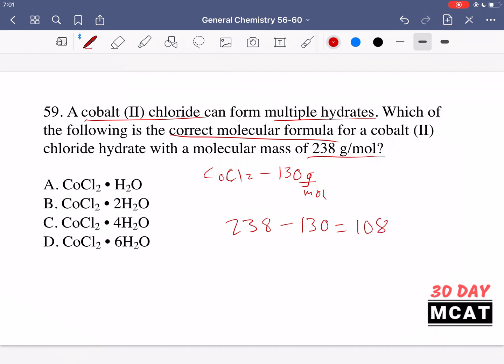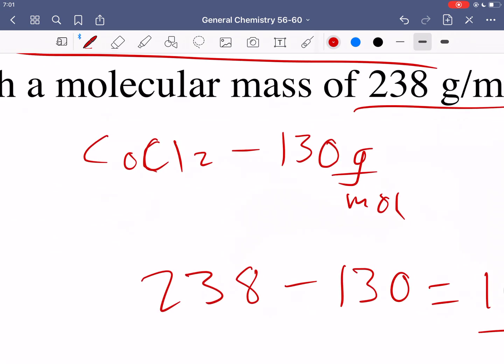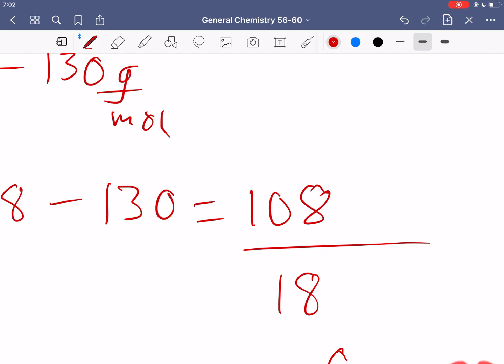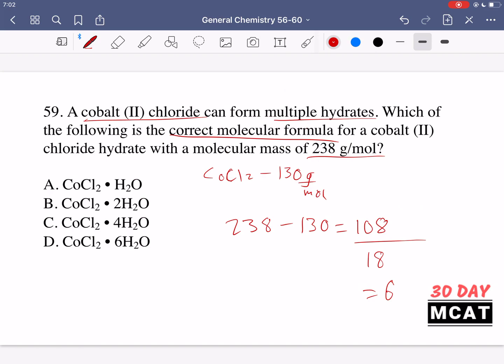Water has 18 grams per mole, so we divide 108 by 18 and get 6. We got the molecular mass for cobalt chloride, subtracted it from 238, and the rest must be water. Water has oxygen which is 16 molar mass and two hydrogens each with 1, so it's 18. We divide by 18 and get 6, so we have six water molecules attached. D is the correct answer.